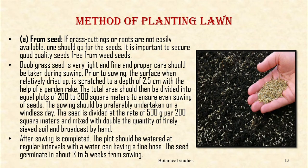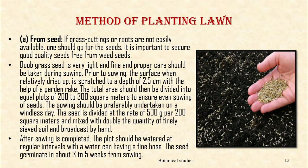Method of planting a lawn from seeds: If grass cuttings or roots are not easily available, one should go for seeds. It is important to secure good quality seeds free from weed seeds. Doob grass seed is very light and fine and proper care should be taken during sowing. Prior to sowing, the surface when relatively dried up is scratched to a depth of 2.5 cm with the help of a garden rake. The total area should then be divided into equal plots of 200 to 300 square meters to ensure even sowing. The sowing should be preferably undertaken on a windless day. The seed is divided at the rate of 500 grams per 200 square meters and mixed with double the quantity of finely sieved soil and broadcast by hand. After sowing is completed, the plot should be watered at regular intervals with a watering can having a fine rose. The seed germinates in about 3 to 5 weeks from sowing.